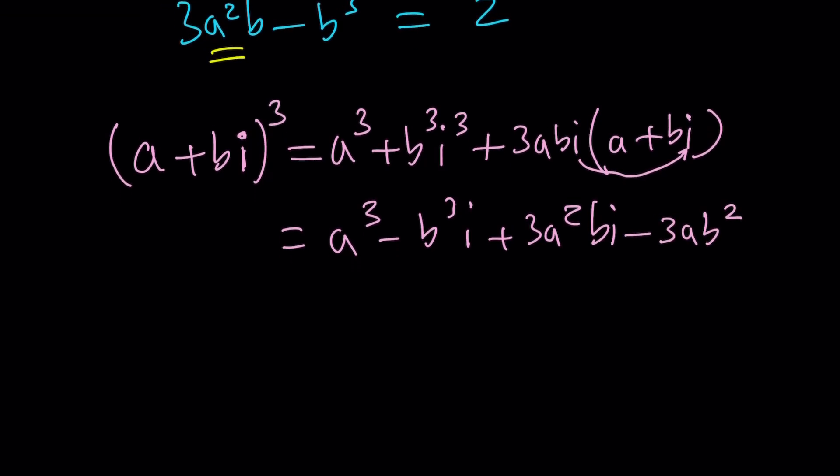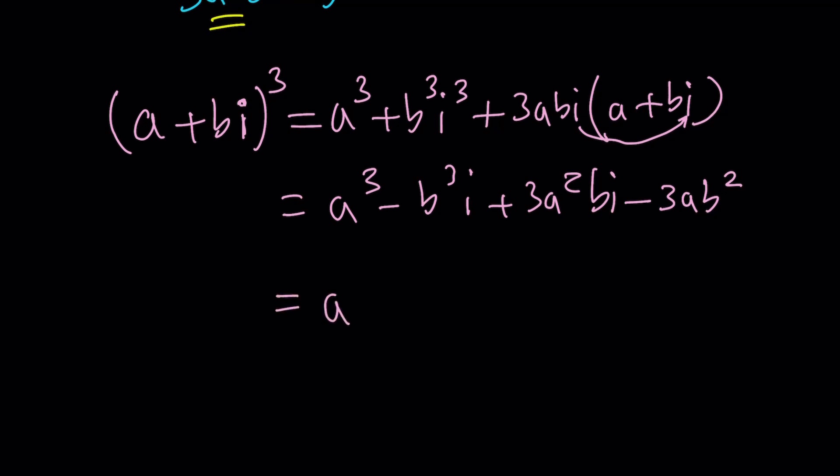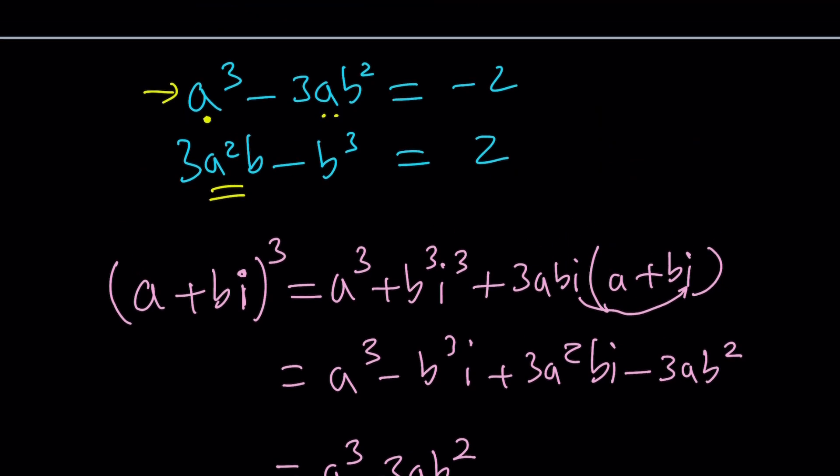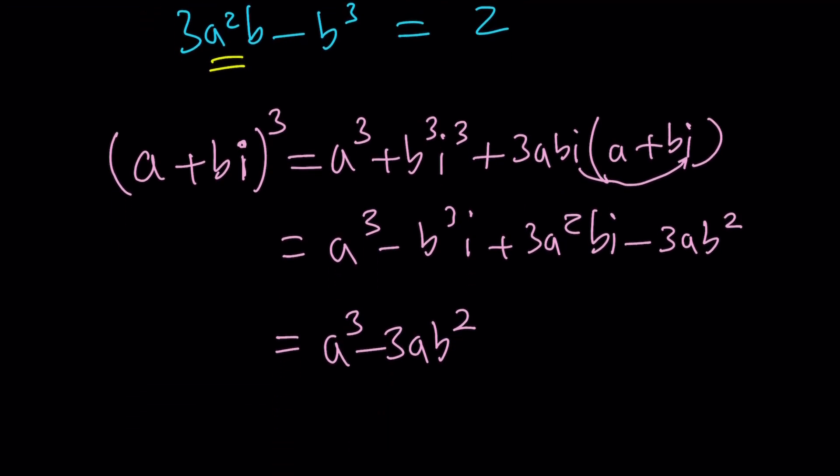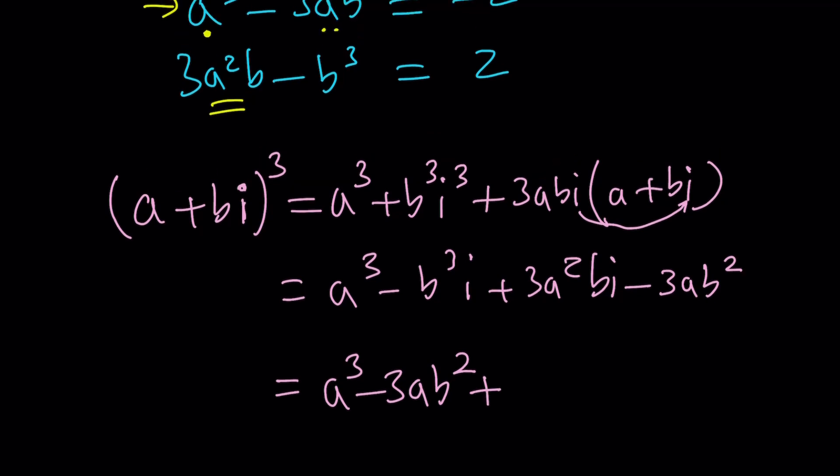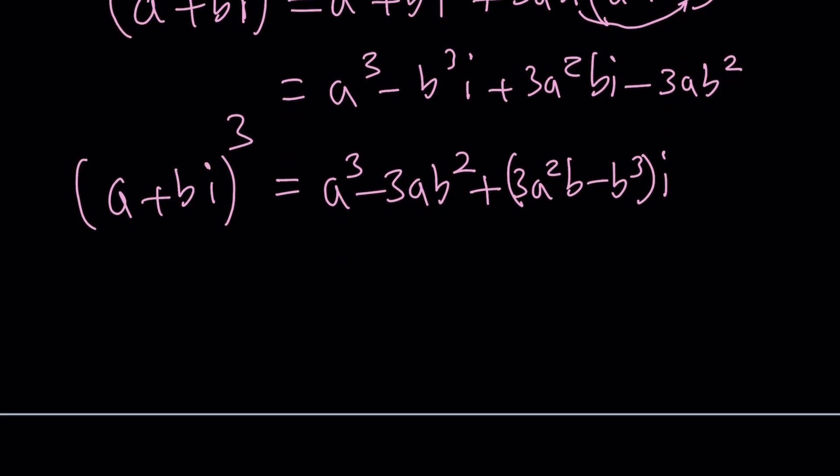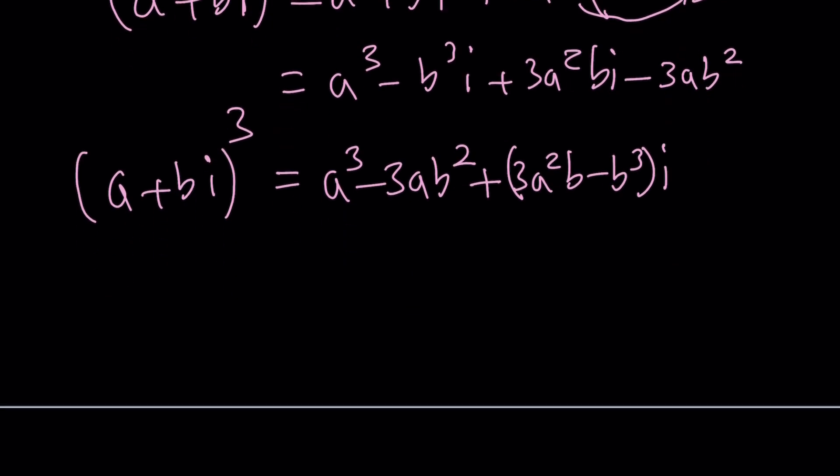And guess what this gives you? Exactly our equations! a³ - 3ab² and 3a²b - b³, all multiplied by i. This is what we get. Isn't that cool? We use the binomial theorem on a complex number.